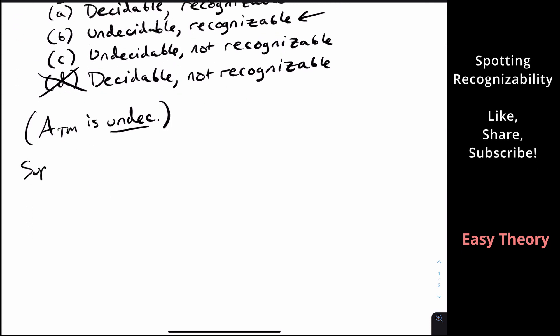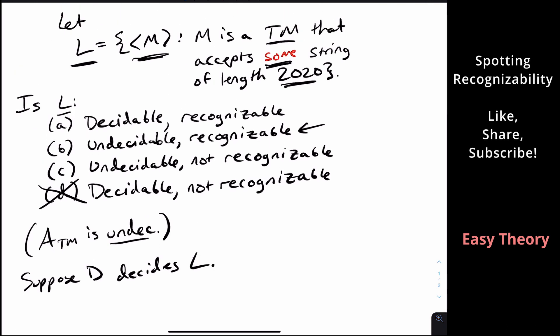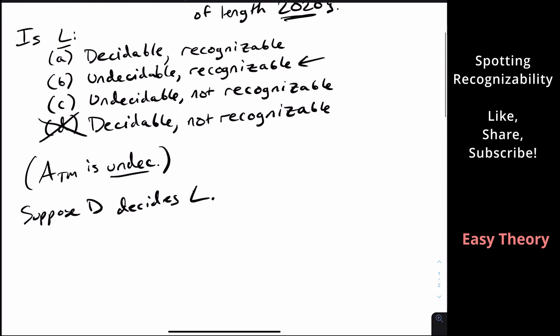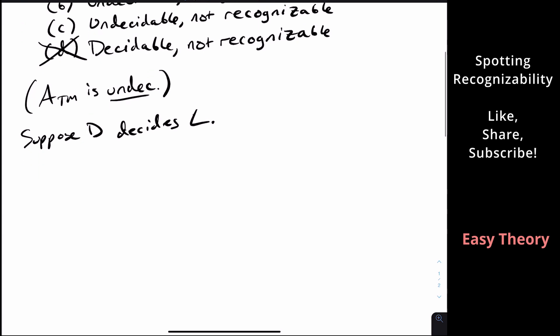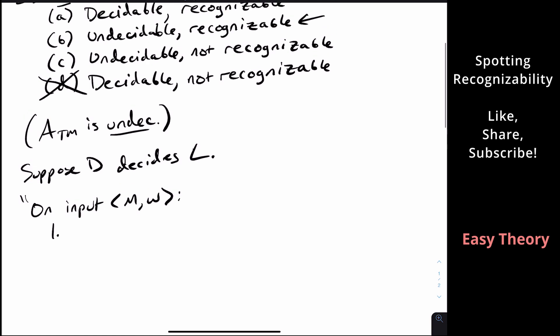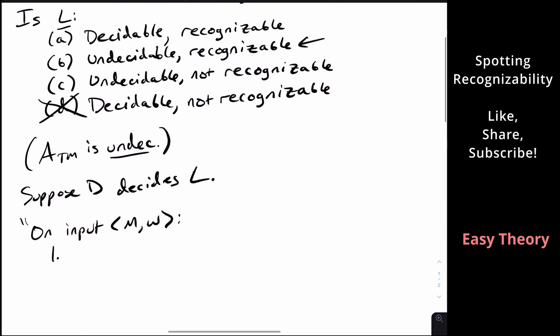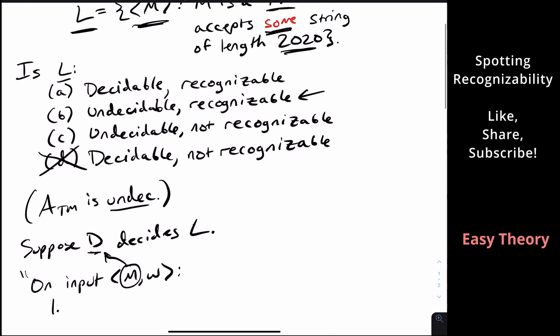So let's suppose that D decides L, the language that we want to show to be undecidable. So what we want to do then is to design a decider for ATM. So on input M,W, where M is a Turing machine and W a string, well, the common way of dealing with this is, well, I can't just feed this machine M into the decider D for the language L.